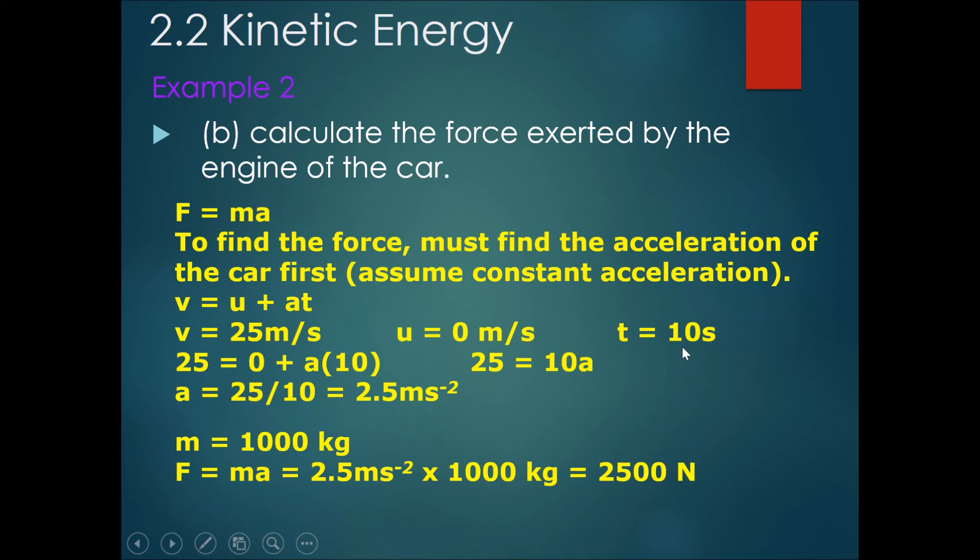So 25 equals 0 plus a times 10, and therefore you should get acceleration to be 2.5 meters per second squared. Bringing it into the formula, mass equals 1000 kg, and therefore F, the force of the engine, equals m times a, equals 2.5 times 1000 kg, getting you 2500 newtons.